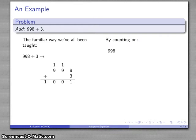If I try counting on, let's see. 998 plus 3, that's the third number after 998. That's 999, 1000, 1001. There's my answer.